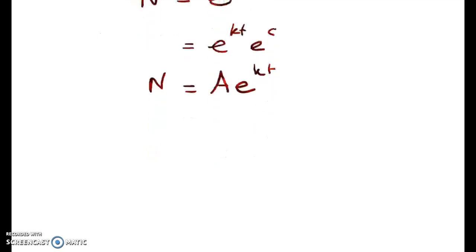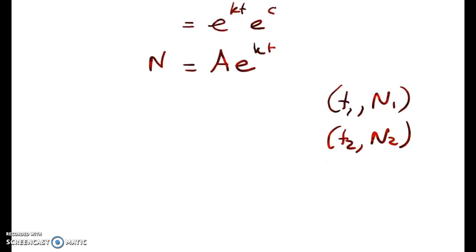As usual, different ways to do this question. Now we've got two bits of information. We've got at time 1, n is equal to n1, and at t2, n is equal to n2. So I'm going to substitute both of these in here now.